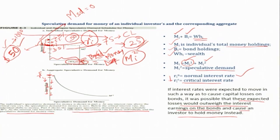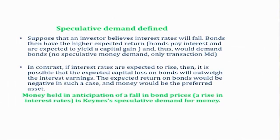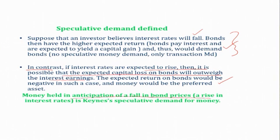To summarize: if an investor believes interest rates will fall, bonds have higher expected return and thus the investor demands bonds — there is no speculative demand for money, only transaction money demand. In contrast, if interest rates are expected to rise, the expected capital loss on bonds may outweigh interest earnings, making the expected return on bonds negative. In such a case, money would be the preferred asset. Money held in anticipation of a fall in bond prices — meaning a rise in the rate of interest — is Keynes' speculative demand for money.